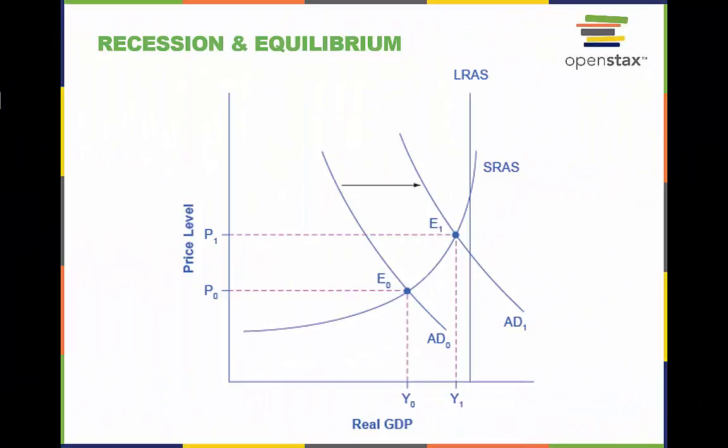Whether the economy is in a recession is illustrated in the AS-AD model by how close the equilibrium is to the potential GDP line. In this example, the level of output Y0 at equilibrium E0 is relatively far from the potential GDP line, so it can represent an economy in recession, well below the full employment level of GDP. In contrast, the level of output Y1 at equilibrium E1 is relatively close to potential GDP, and so it would represent an economy with a lower unemployment rate.